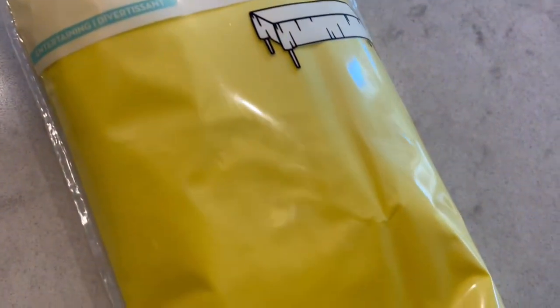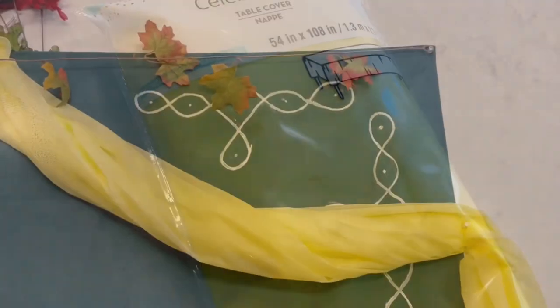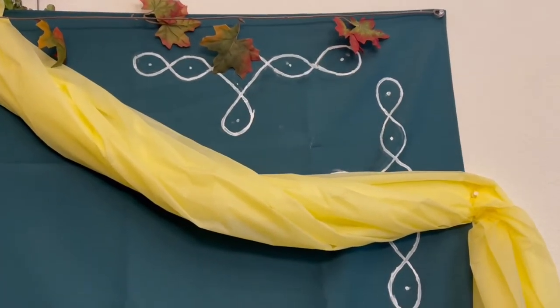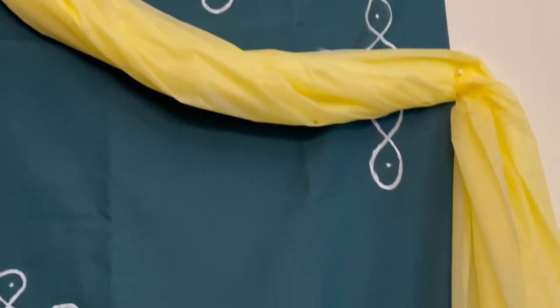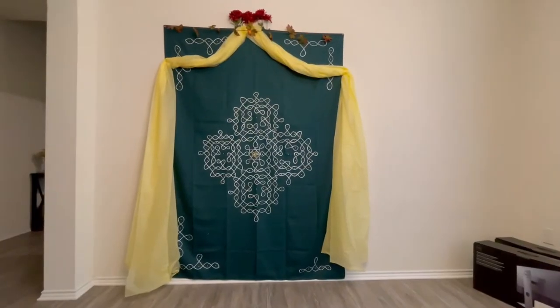We purchased two yellow tablecloths to decorate on the backdrop. With the help of push pins, we twisted and just added them to the wall. So after attaching these two tablecloths, it is looking so beautiful.